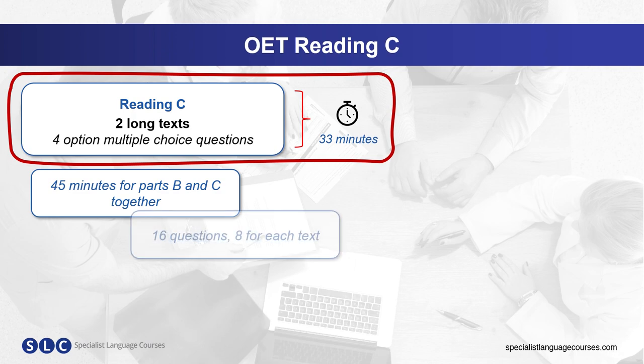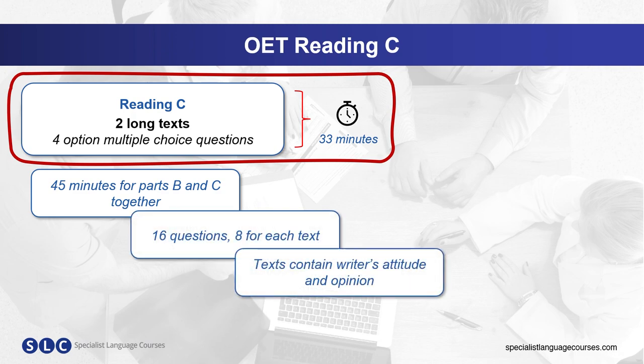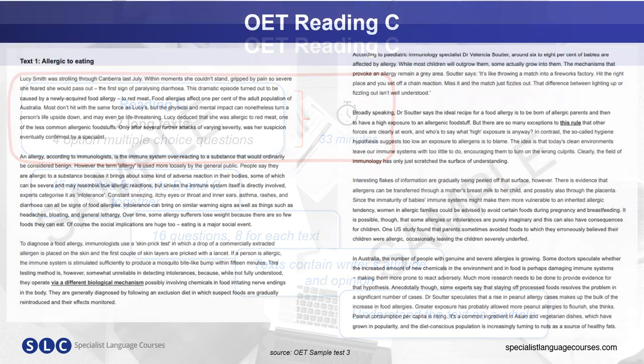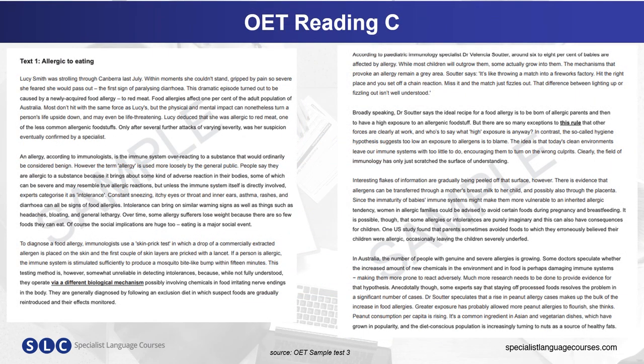There are 16 questions in total, eight for each text. The texts contain the writer's attitude and opinion, and you need to understand the text as a whole to achieve a good score in part C. There are two texts and they will be understandable to all professions, so no specialist knowledge is needed.